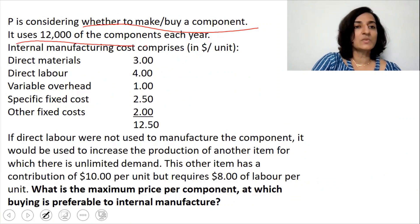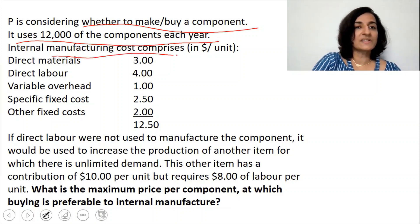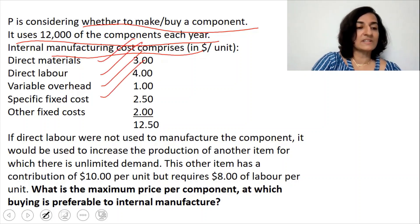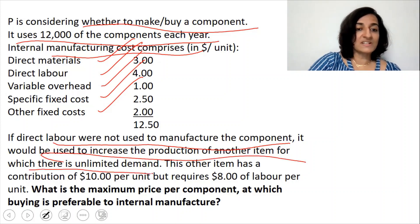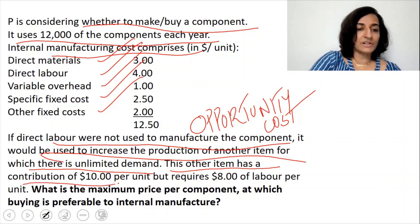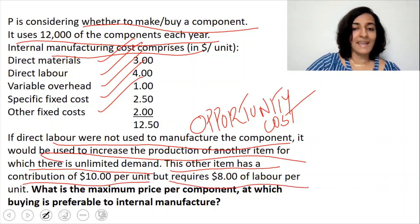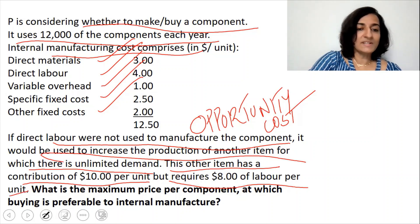Moving to the second MCQ. A company is considering whether to make or buy a component and uses 12,000 units per year. Internal manufacturing costs comprise direct material, direct labor, variable overheads, specific fixed cost, and other fixed cost. If direct labor were not used to manufacture the component, it would be used to increase production of another item for which there is unlimited demand — meaning opportunity cost is involved. The other item has a contribution of $10 per unit but requires $8 of labor per unit.